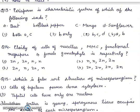Question 13. Perisperm is characteristic feature of which of the following seeds? A. Beet, B. Black pepper, C. Mango, D. Sunflower. Options: 1. both A and C, 2. B only, 3. B, C, D, 4. A and B. Right answer will be 4th, A and B: beet and black pepper are perispermic seeds.